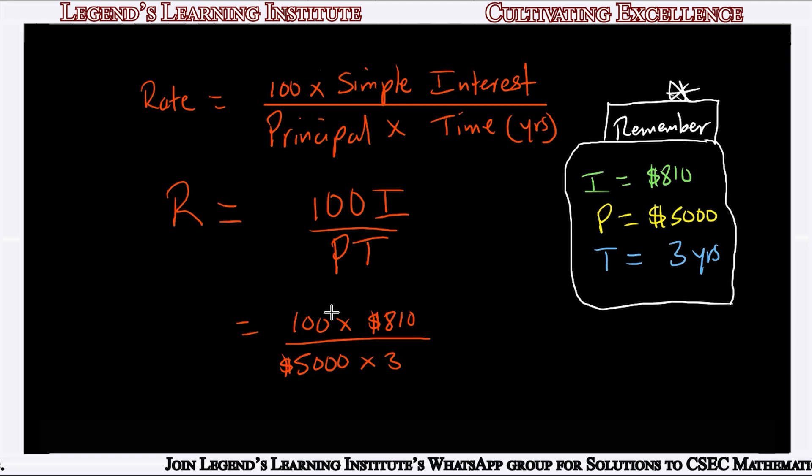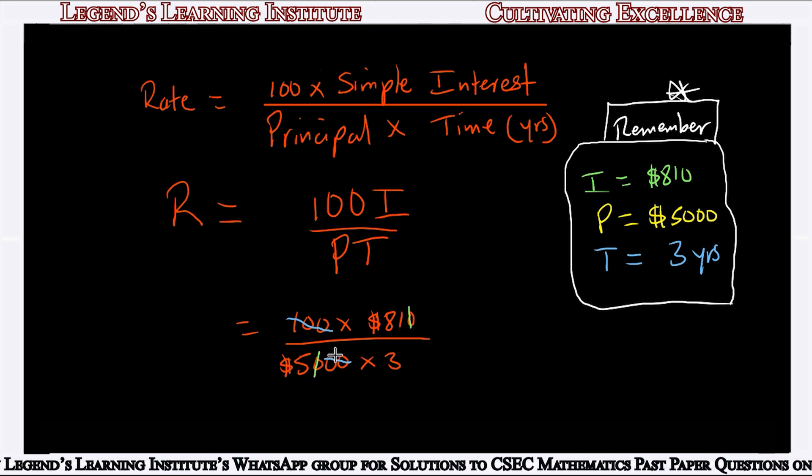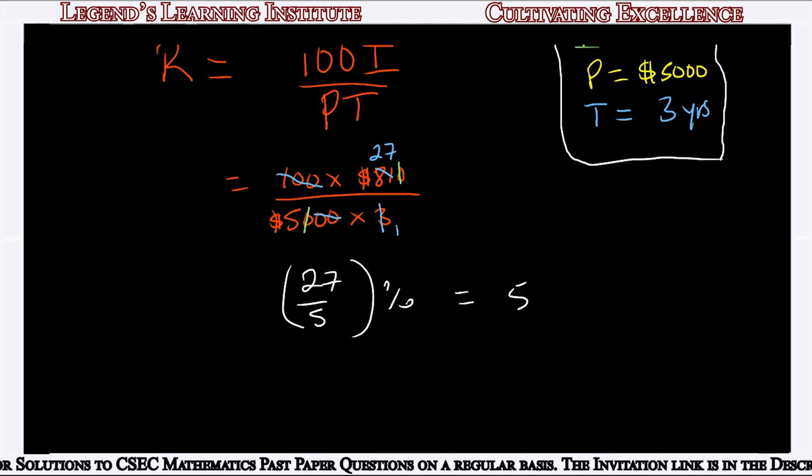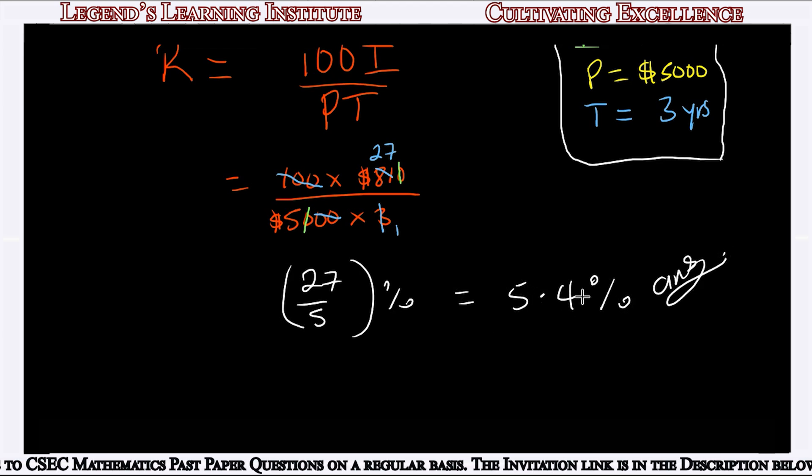So we have 100 times 810 divided by 5,000 times 3 years. We cancel: 100 in the numerator cancels two zeros of the 5,000, and the zero from 810 cancels the next zero from 5,000. Then 3 into 3 is 1, and 3 into 81 is 27. We get 27/5, which equals 5.4. So the rate of interest is 5.4%.